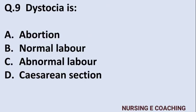Question 9: Dystocia is — Option A: abortion, Option B: normal labour, Option C: abnormal labour, Option D: caesarean section. Answer is C — abnormal labour. Dystocia means abnormal labour, while normal labour is called eutocia.